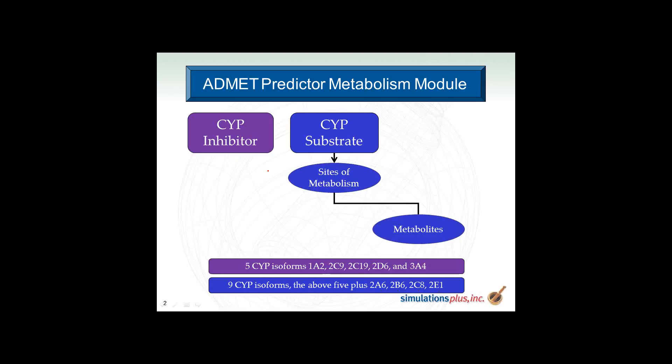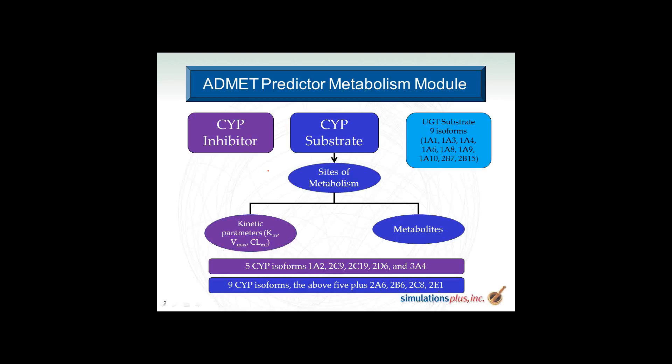Both those are classification models. We also predict sites of metabolism — this will take a molecule and predict where it might be metabolized by these nine CYP isoforms. If it predicts a particular site, we can also display the metabolites in MedChem Designer or use MedChem Studio to generate those final metabolites. We also have models that will predict kinetic parameters such as KM, Vmax, and clearance for the sites of metabolism identified in the model.